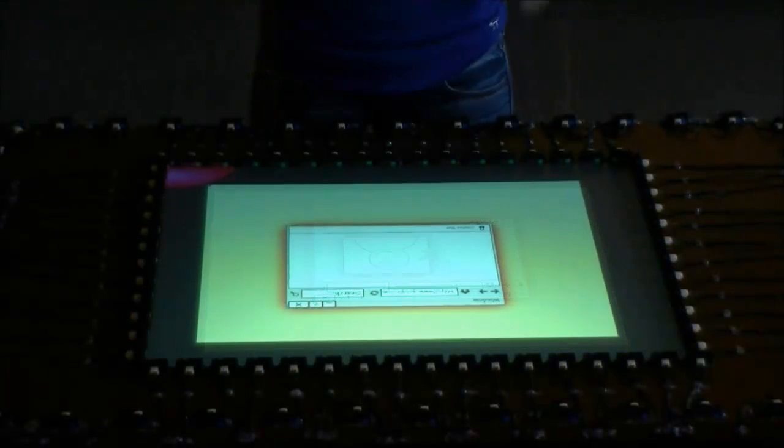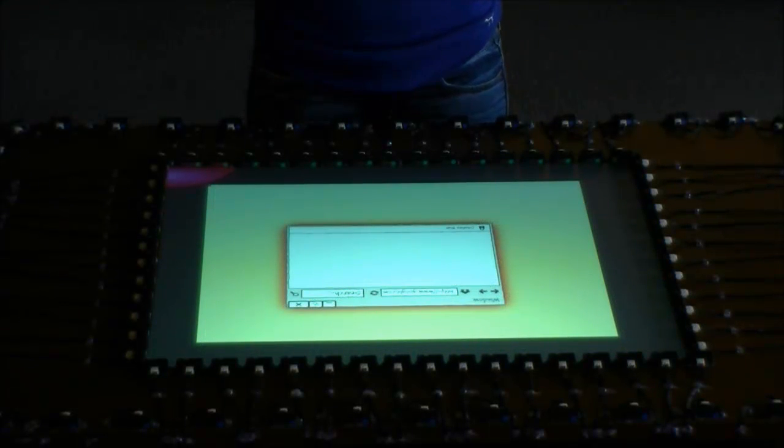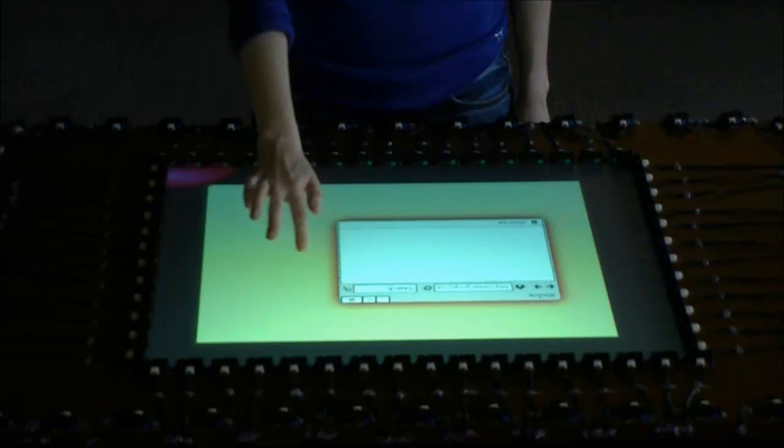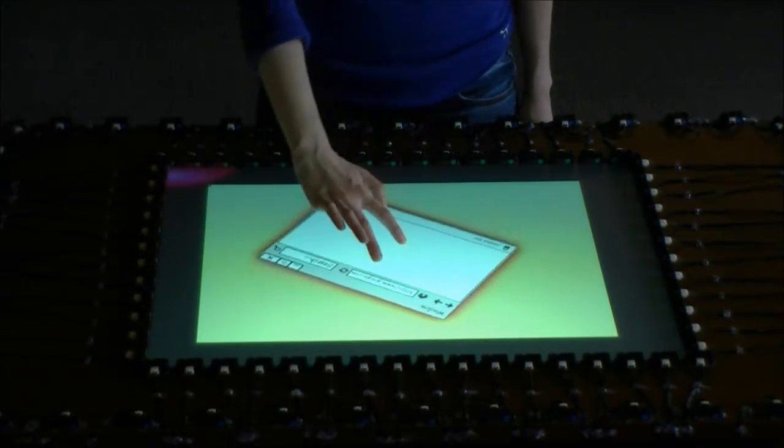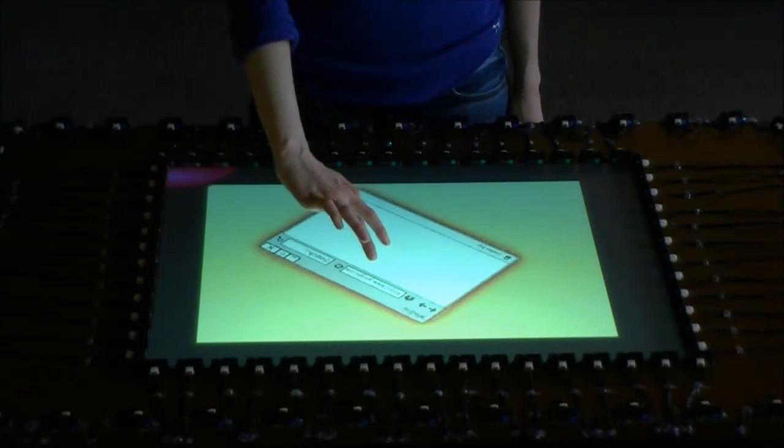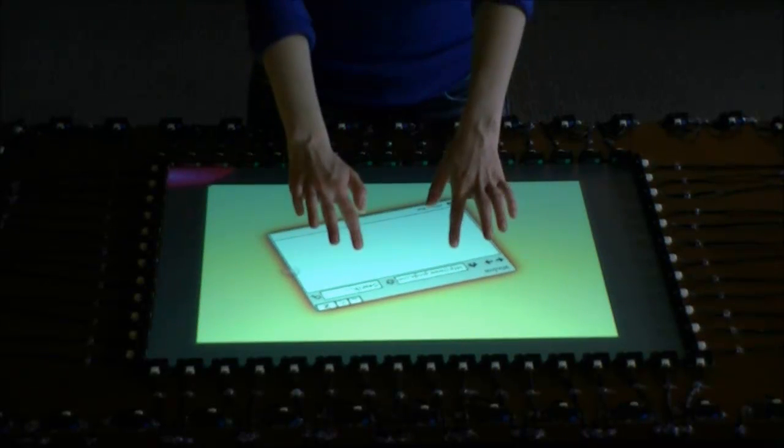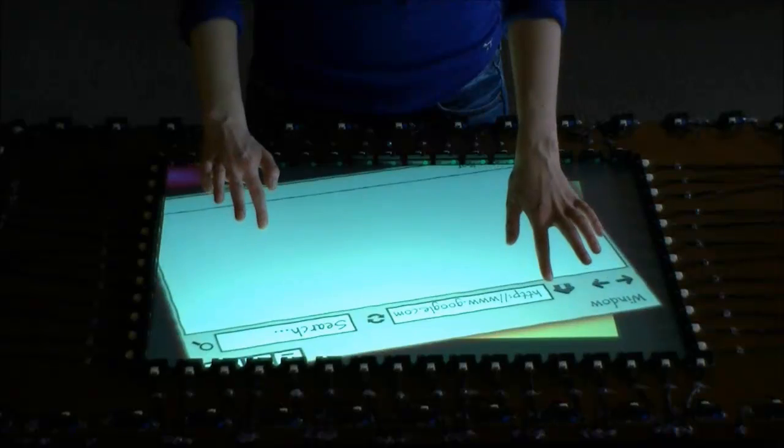To increase the precision of physical manipulations, ProxySketch differentiates manipulation transforms based on which hand is used. Here, when a user touches a component with one finger, they can move it. When the user touches the component using two fingers from the same hand, they can rotate it. If the user touches the component with one finger from each hand, they can scale the component.